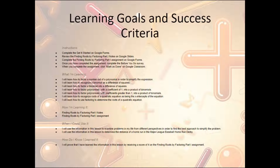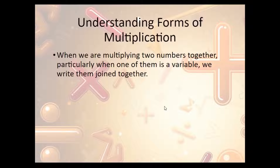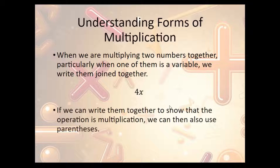The notes begin with the learning goals and success criteria. Understanding multiple forms of multiplication: when we are multiplying two numbers together, particularly when one of them is a variable, we write them joined together. So we're multiplying 4 times x, we write them joined together. We can also use parentheses to do this — so we can write 4 and then parentheses x. They mean exactly the same thing; they're just giving indication of multiplication.